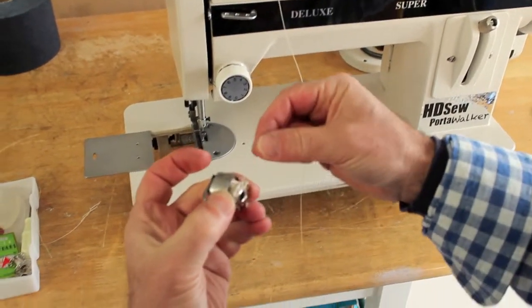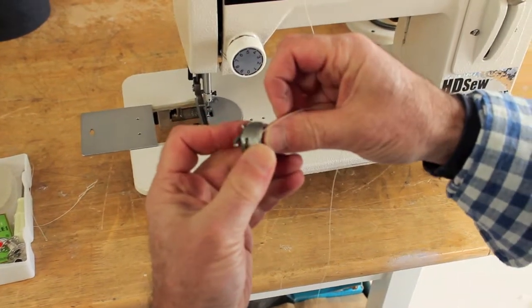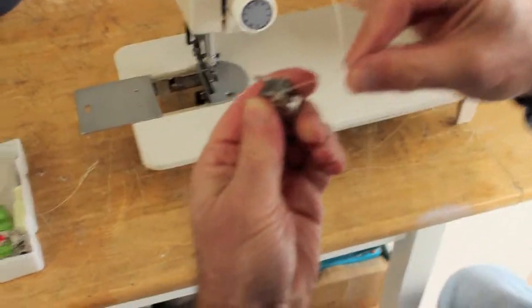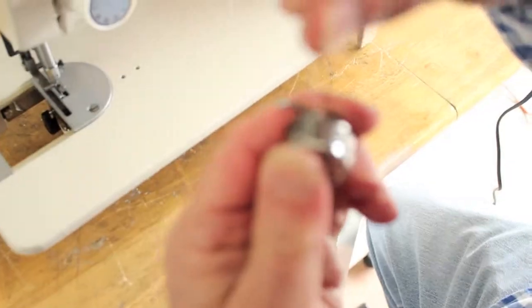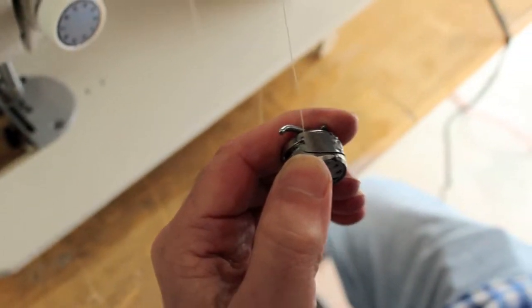You can put the thread going counterclockwise from the bobbin into the case and you want to go in this little slot. You can see a little slot right there and then just like that. That's how you put a bobbin in the bobbin case.